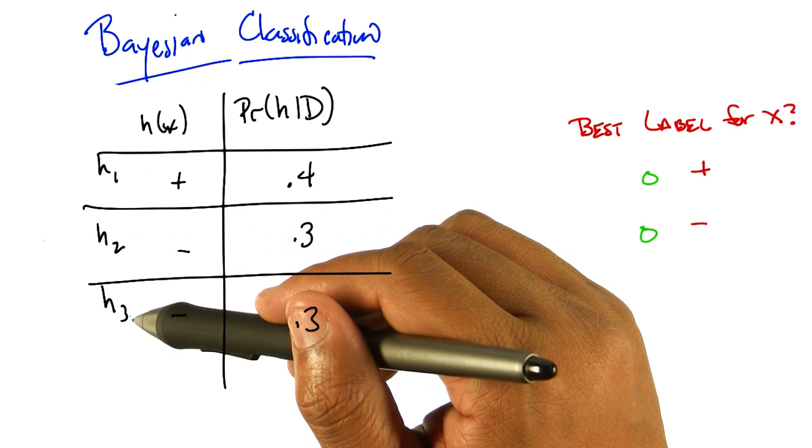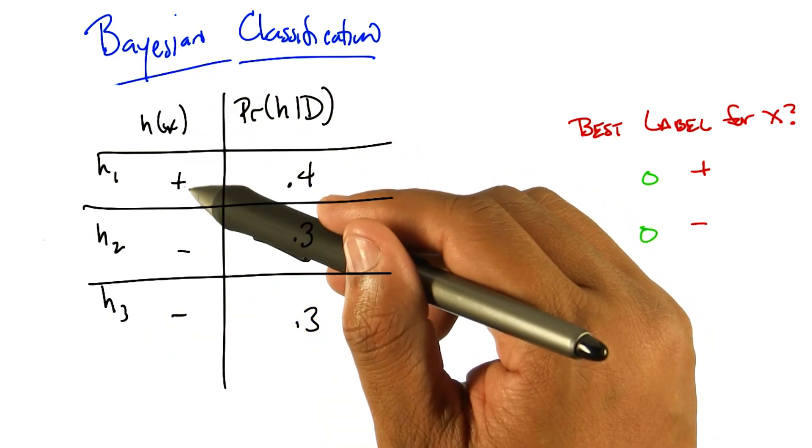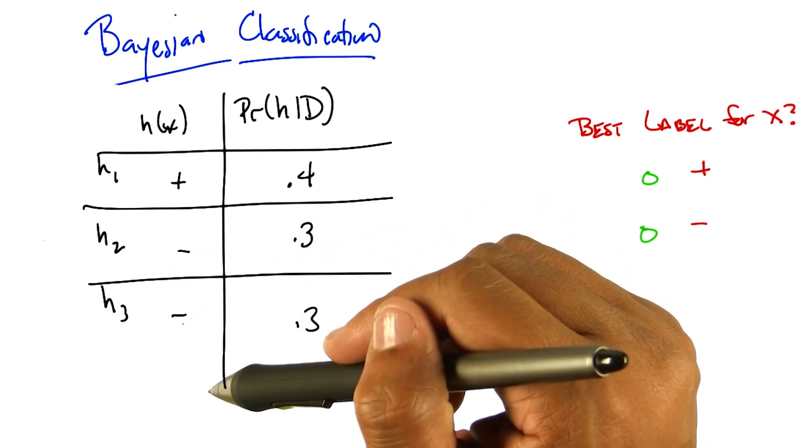Here is what each of these hypotheses outputs for some particular x. h1 says plus, h2 says minus, h3 says minus.